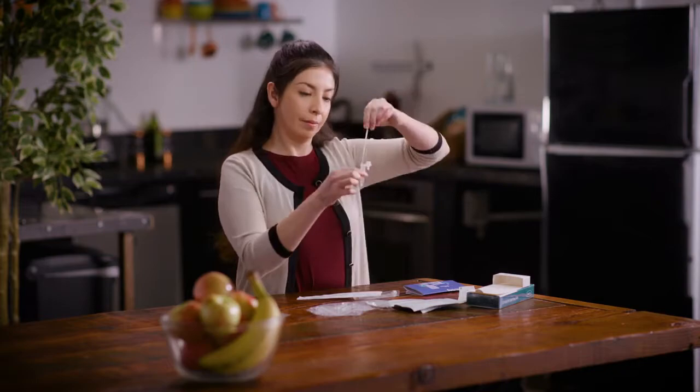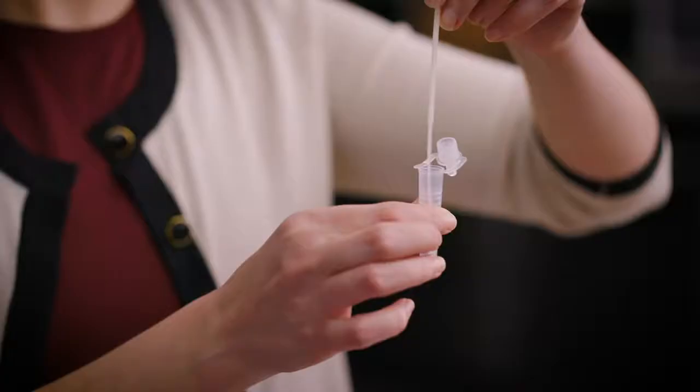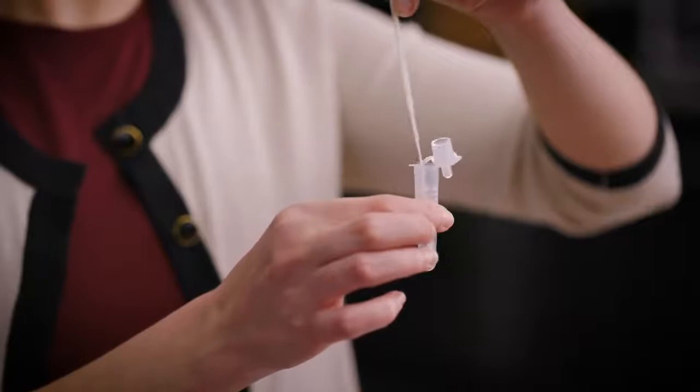After the sample is collected, fully immerse the swab into the buffer liquid in the extraction tube and rotate it around for at least 15 seconds. As you remove the swab, press it against the sides of the tube, removing as much liquid as possible.